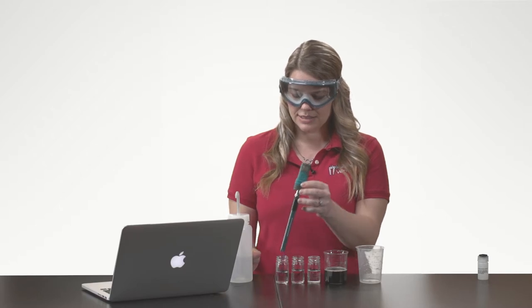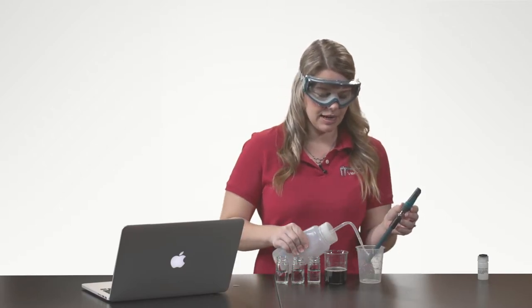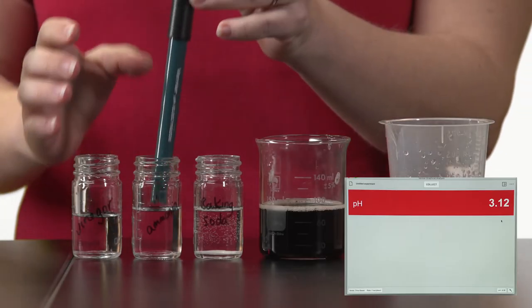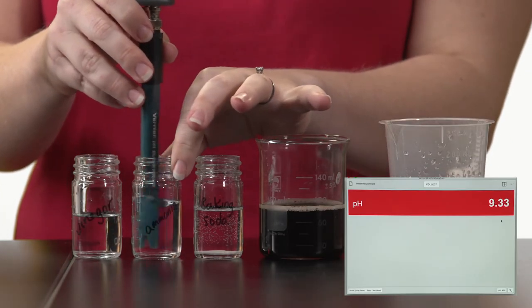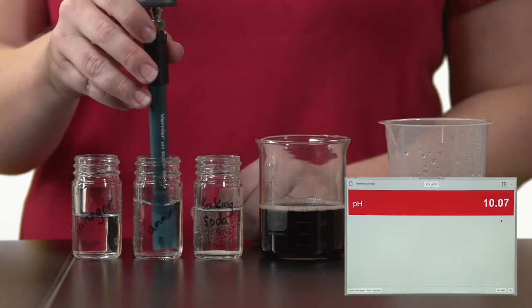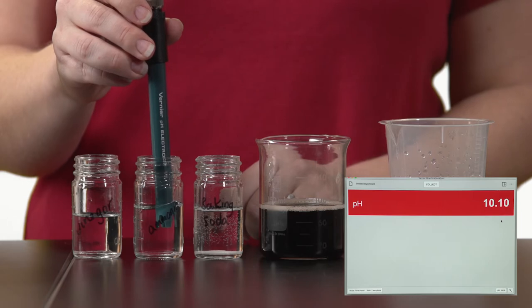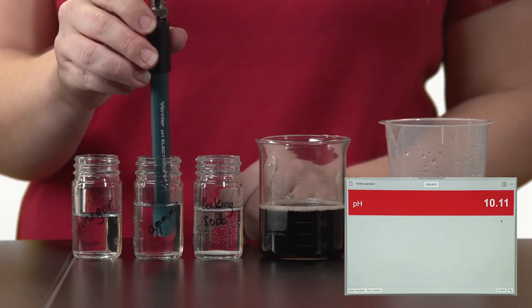To switch to my next solution, I need to rinse the tip again. And then I will measure ammonia. That solution is definitely basic, so I will record that pH reading in my lab notebook.